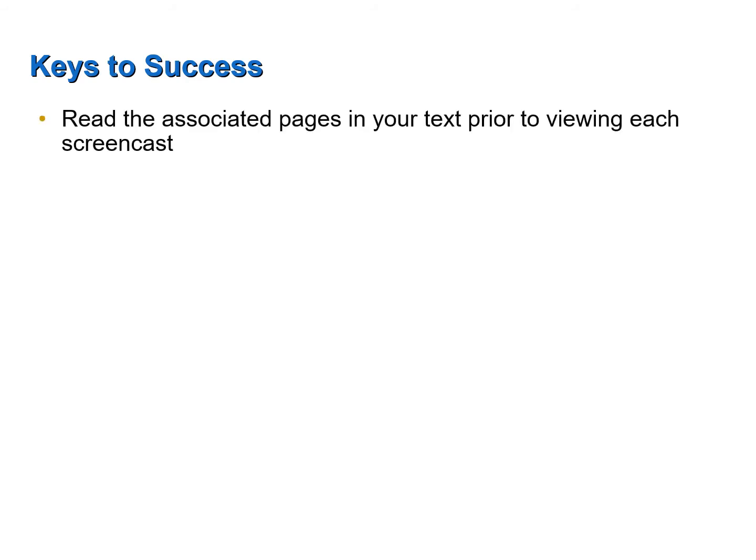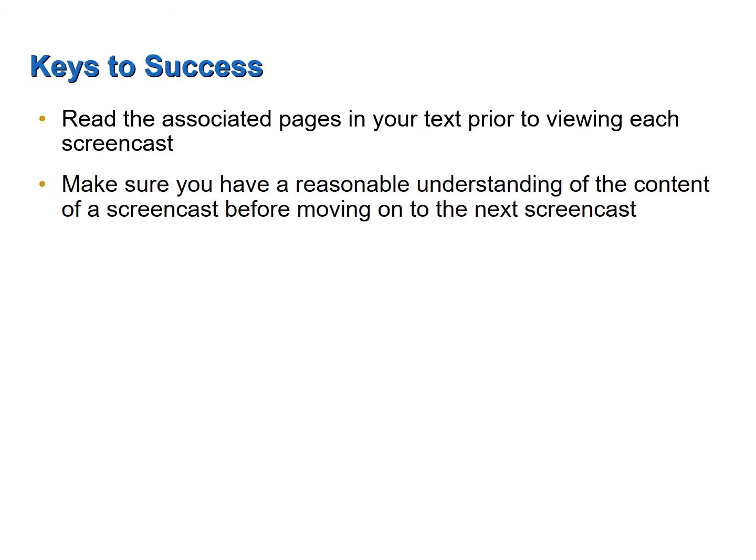First, make sure that you read the associated pages in your textbook prior to viewing each screencast. Make sure that you have a reasonable understanding of the content of a screencast before moving on to the next, because the information on the nervous system builds upon previous information. It will be very difficult to understand a subsequent screencast if you don't have a basic understanding of the previous one.